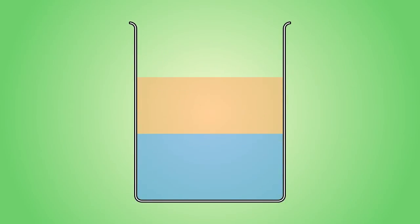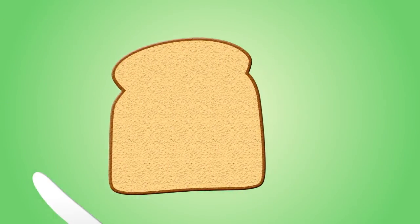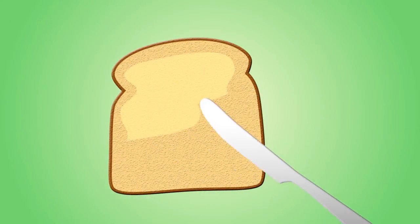We have previously learned that an emulsion is a mixture of two immiscible liquids stabilized using an emulsifier. Margarine is a very good example of an emulsion.